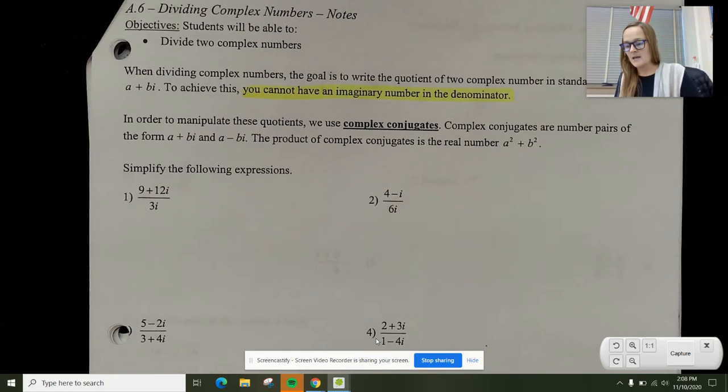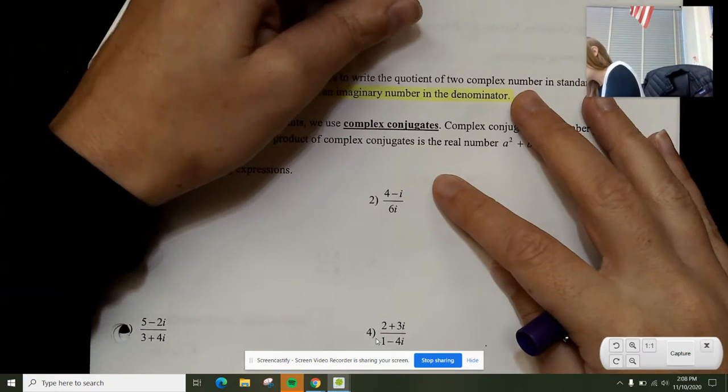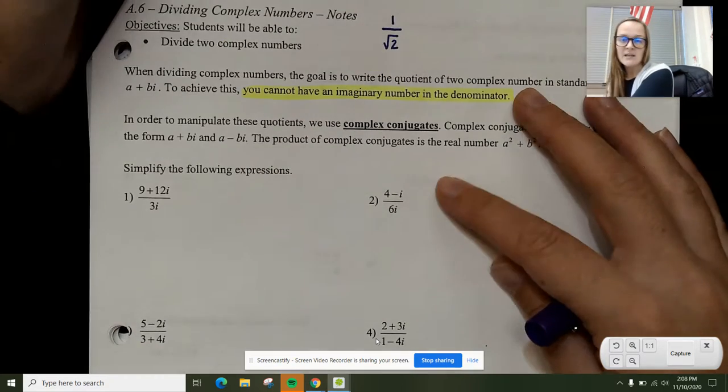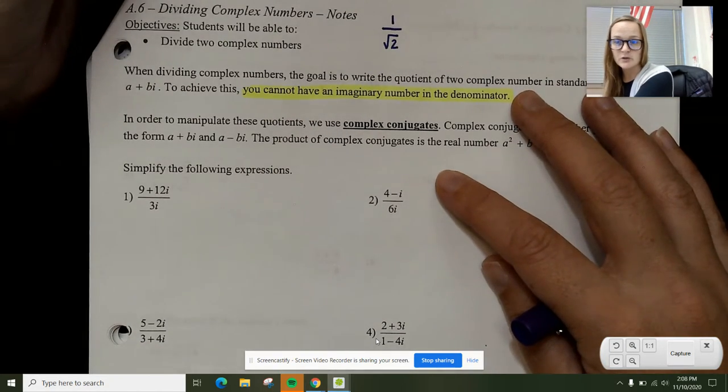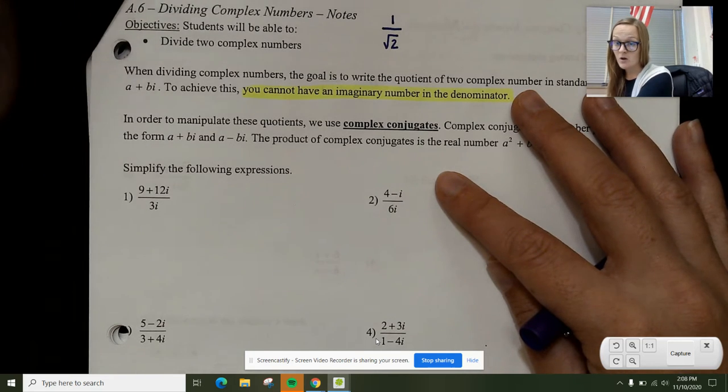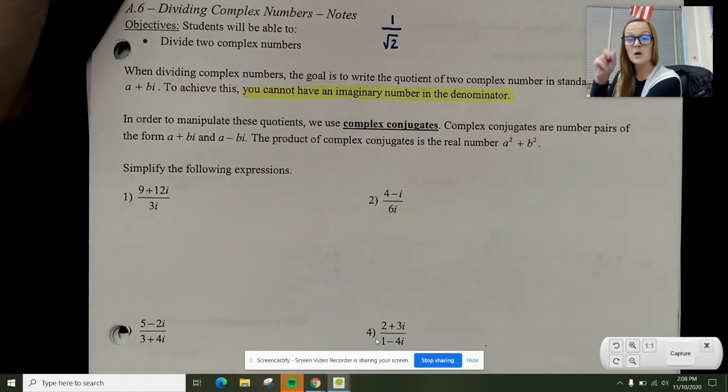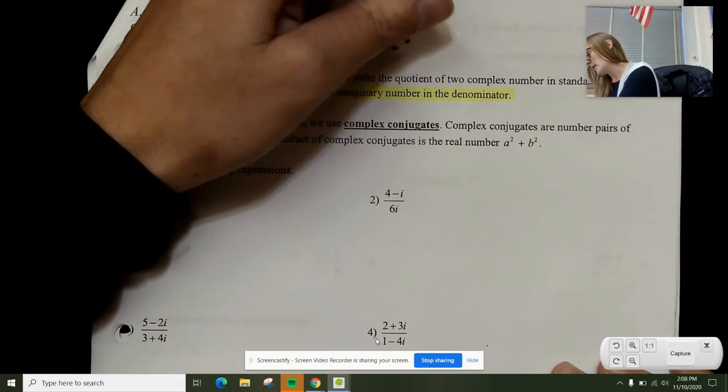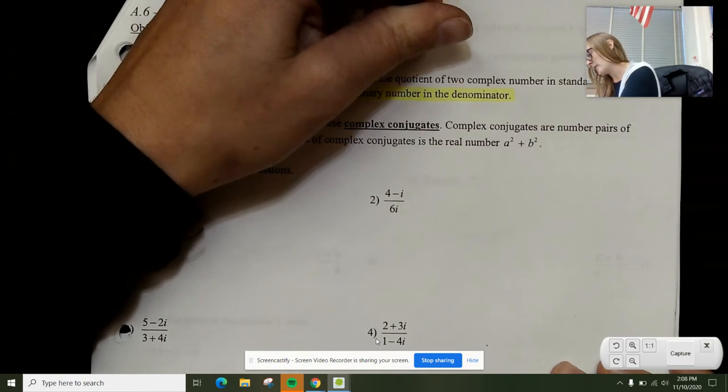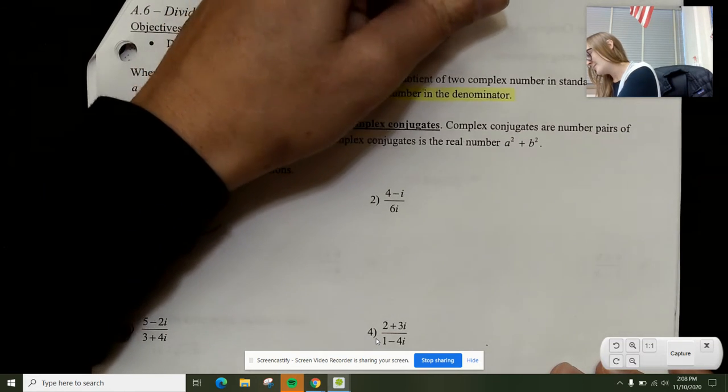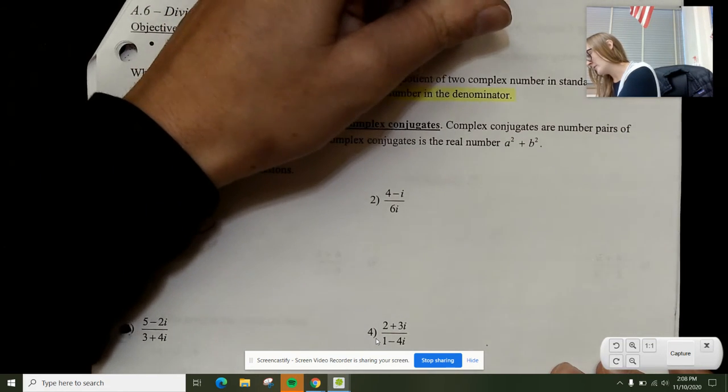Think back to in geometry. You should have done something like one over square root of two. You were told you can't have the square root of two in the denominator of a fraction. What you had to do is it was called rationalizing the denominator. In geometry, you had to multiply by the square root of two over the square root of two, and you got the square root of two over two.